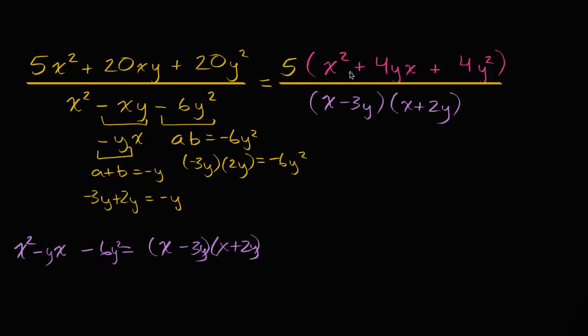So it seems like we can rewrite the numerator. This is going to be, so let me draw a little line here to make it clear that this is going to be equal to five times x plus two y times, I could say just x plus two y squared, or I could just say x plus two y times x plus two y.